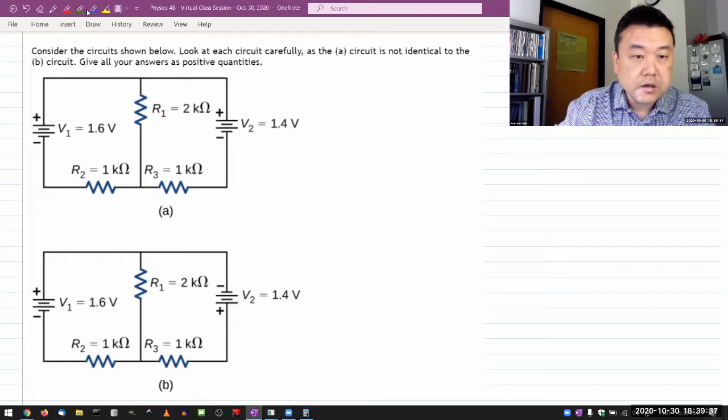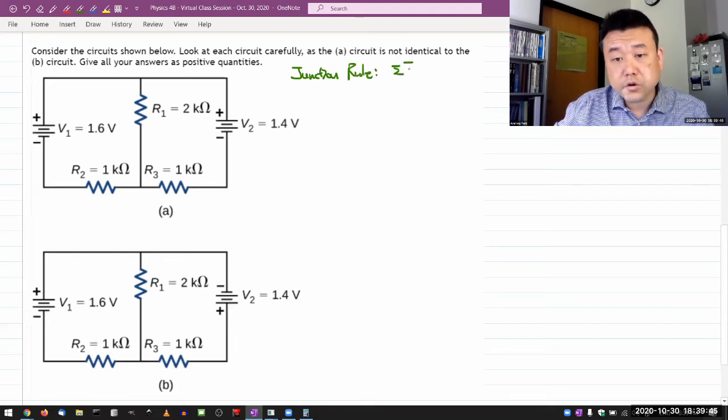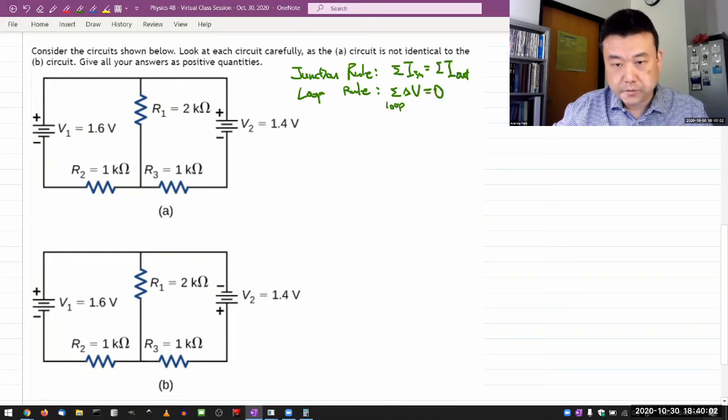With the circuit, I'm going to be using Kirchhoff's rules. Let me write down those two rules. I have the junction rule, which I'm going to be using first. Junction rule says the sum of all the currents coming in is equal to sum of all the currents going out. And the loop rule says sum of all the voltage changes that you collect as you go on the loop, sum loop is equal to zero.